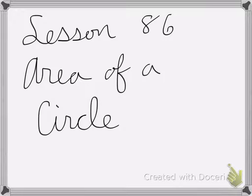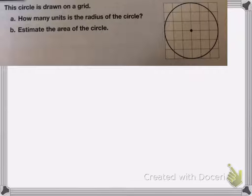Alright, so lesson 86 is on the area of a circle. Here we have a circle drawn on a grid and it wants to know about how many units is the radius of a circle and then estimate the area of the circle.